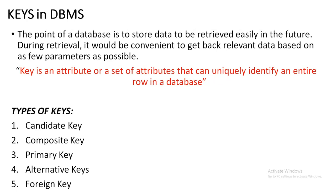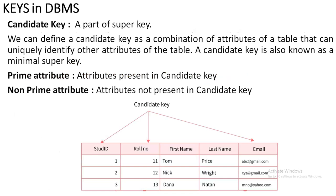There are various types of keys available in DBMS. They are: Candidate Key, Composite, Primary, Alternative, and Foreign Key.